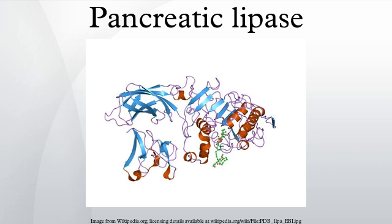This protein belongs to the pancreatic lipase family. Unlike some pancreatic enzymes that are activated by proteolytic cleavage, pancreatic lipase is secreted in its final form. However, it becomes efficient only in the presence of colipase in the duodenum.